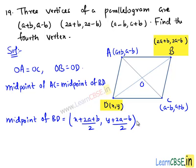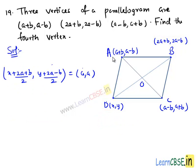Now let us equate the midpoints. Equating the midpoint of AC and midpoint of BD, we get ((x + 2a+b)/2, (y + 2a-b)/2) equals (a, a).